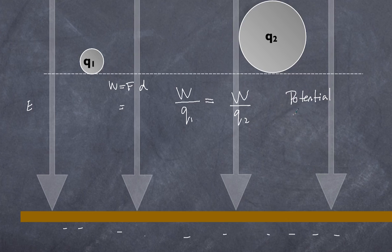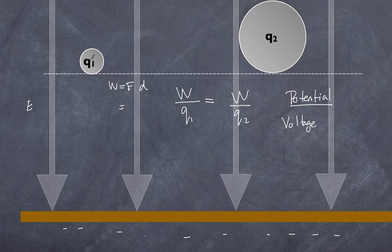If I divide the work done by the charge in each case, I get the same value — the work per unit charge, or per coulomb. That is potential. Potential is the amount of work you do per unit charge, and that is often referred to as voltage. The question then is: what is the voltage at a given point, and what are we comparing it to?